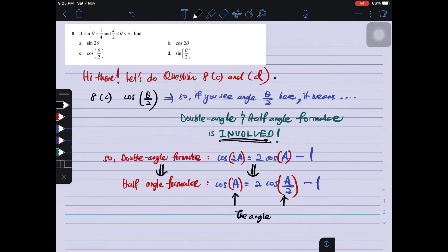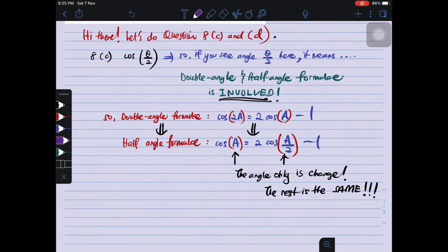So you have to know that it is actually the angle that has been changed. The angle is changed from 2A to A, from A to A/2, divided by 2. It is becoming half. Half of the angle. That's why it is called half angle formula.